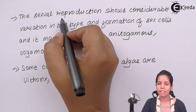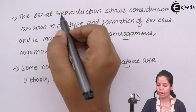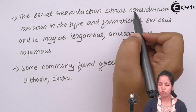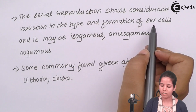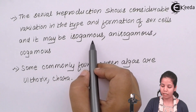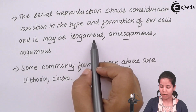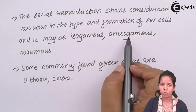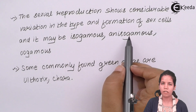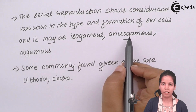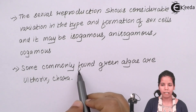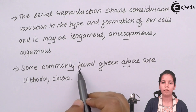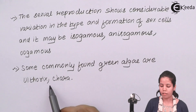Now let's talk about sexual reproduction in this form of algae. This form shows various types of formation of sex cells or gametes. These gametes could be isogametes, which are similar gametes, or they could be anisogametes, which are gametes with slight variation — where the male gamete would be slightly bigger as compared to the female counterpart.